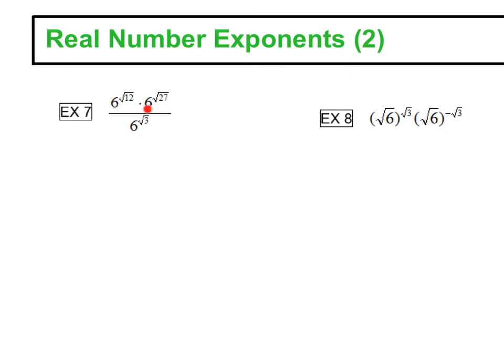So in this numerator we are multiplying the same base, so we know that that means we can keep our base of 6, and we are going to add those exponents. So square root of 12 plus square root of 27 over 6 raised to the square root of 3 power.